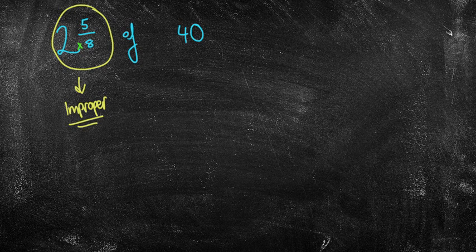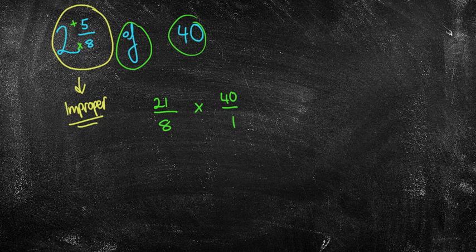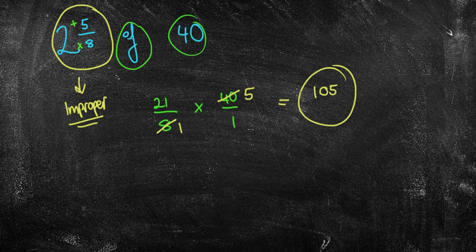Well, 2 times 8 is 16, plus 5 is 21. So we have 21 over 8. Now of means times, and we have 40 over 1. So you can see how I've rewritten that question. Now I could do 21 times 40. That's going to be a pretty big number. But I might recognize that 8 goes into 40 exactly. 8 goes into 8 once. 8 goes into 40 five times. So now I can do 21 times 5. Well, 20 times 5 is 100. 1 times 5 is 5, so we've just got 105. See, a really tough question, but putting it as an improper fraction first, and then simplifying before we go ahead, is the best way to do it.